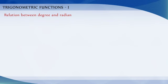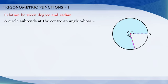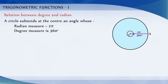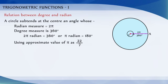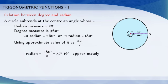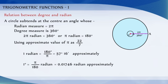Relation between degree and radian. Since a circle subtends at the center an angle whose radian measure is 2π and whose degree measure is 360, we get 2π radian = 360 degrees, or π radian = 180 degrees. Using the approximate value of π as 22/7, we get 1 radian ≈ 57 degrees 16 minutes. Also, 1 degree ≈ 0.01746 radian.